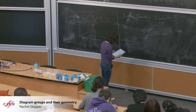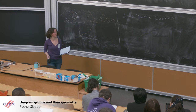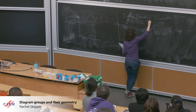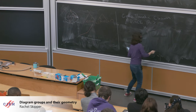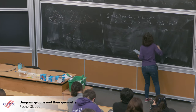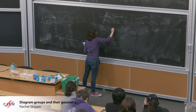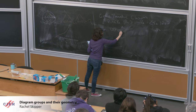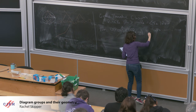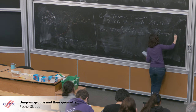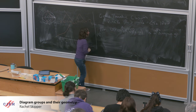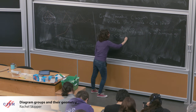The first thing I'll argue is that if I have two diagram groups, then their direct product is still a diagram group. Say P₁ = ⟨Σ₁ | R₁⟩ with base word U₁, and P₂ = ⟨Σ₂ | R₂⟩ with base word U₂. The claim is that D(P₁, U₁) × D(P₂, U₂) is also a diagram group.